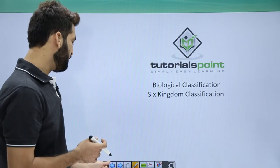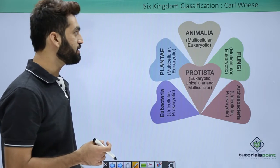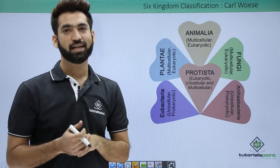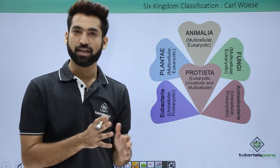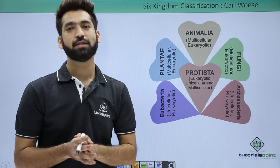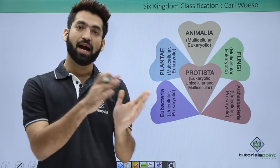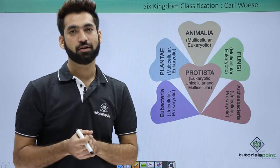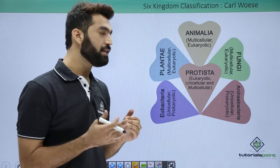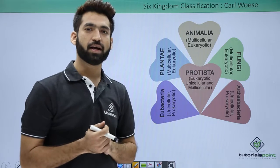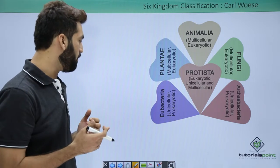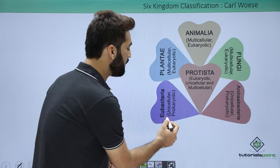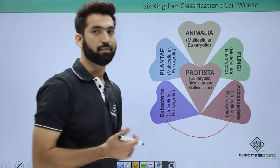In this session we'll be talking about the six kingdom classification system, which was given by Carl Woese. In R.H. Whittaker's system, there was one group assigned to all prokaryotes called Kingdom Monera, and the other four kingdoms were assigned to all eukaryotic organisms. What Woese did is he did not disturb those eukaryotic members — he worked upon Kingdom Monera and classified it into Eubacteria and Archaebacteria.